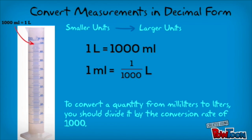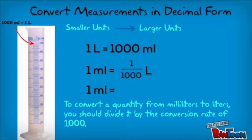To convert a quantity from milliliters to liters, you should divide it by the conversion rate of 1000. So to convert 1 milliliter to liters in decimal form, we will divide 1 by 1000. 1 divided by 1000 equals 0.001 or one-thousandth. So 1 milliliter equals 0.001 liters.